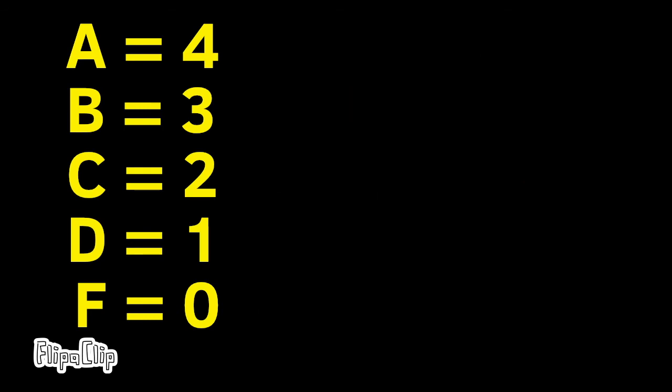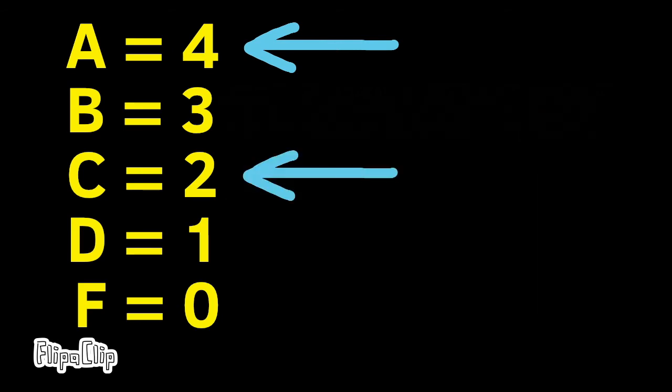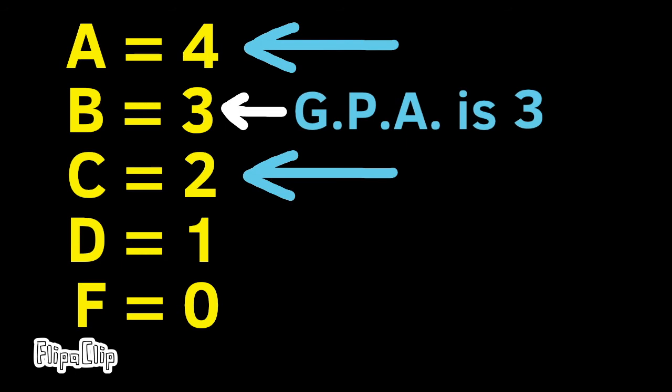Let's do a few of these mentally. Let's imagine that you only took 2 classes, and in one class you got an A, earning 4 points. In the second class you got a C, earning 2 points. The average would be right in the middle, between 2 and 4. So your grade point average would be 3.0.